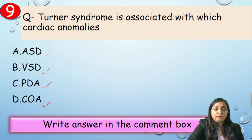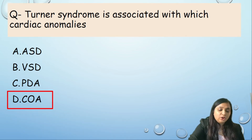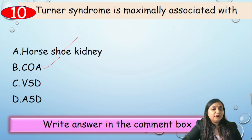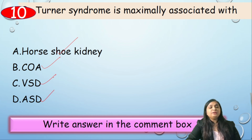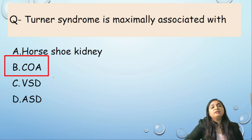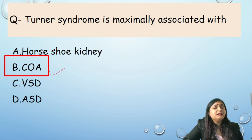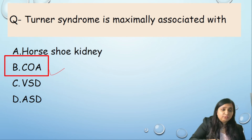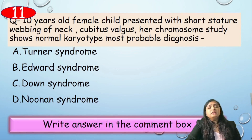Question 9: Turner syndrome is associated with which cardiac anomaly? Options: A) ASD, B) VSD, C) PDA, D) Coarctation of aorta. Correct answer is coarctation of the aorta. Question 10: Turner syndrome is maximally associated with — horseshoe kidney, coarctation of the aorta, VSD, or ASD? This is a tricky question. The correct answer is coarctation of the aorta.